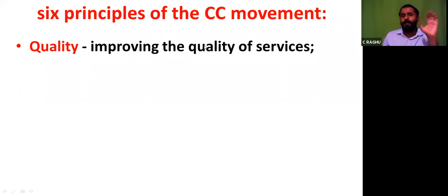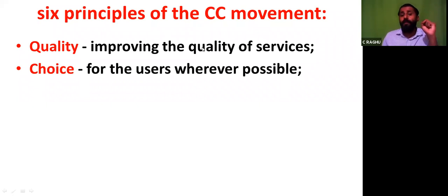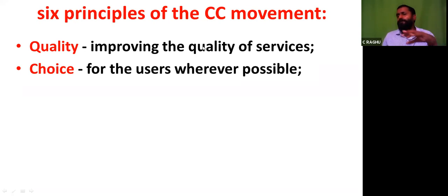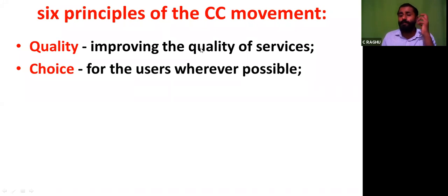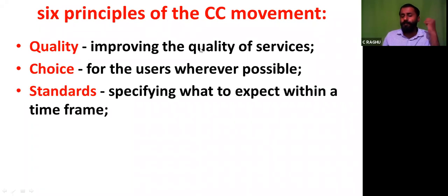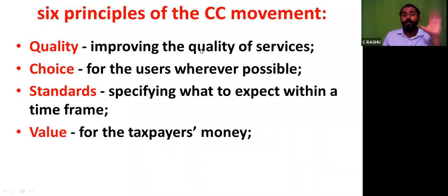The six principles are: one, quality — improving the quality of service; two, choice for users wherever possible. You have to give choice to them — say one person can afford 100 rupees, another can afford only 10, and some want things for free. You can't give only one option to all citizens. Three, standards — specifying what to expect within a time frame. Four, value for taxpayers' money — a very important but often overlooked principle.